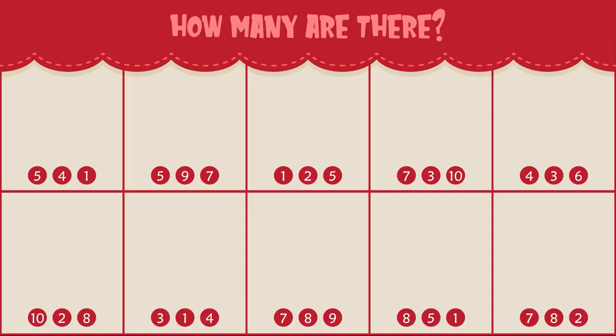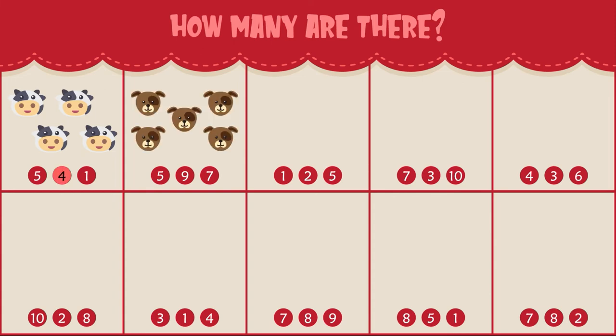Hey, Sprouts! Today we are counting farm animals. Let's count and see how many there are. How many cows do you see? There are four cows. How many dogs do you see? There are five dogs.